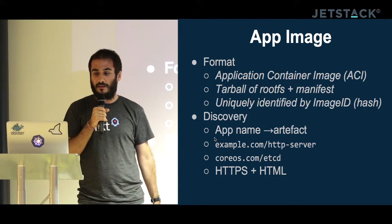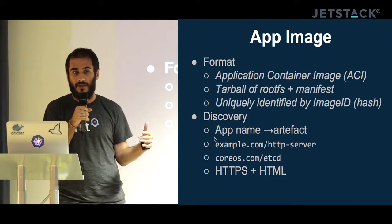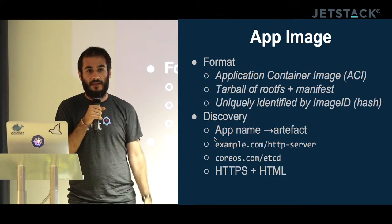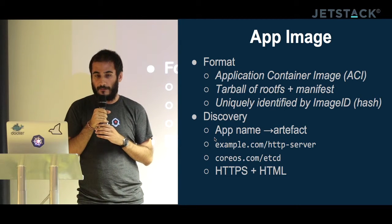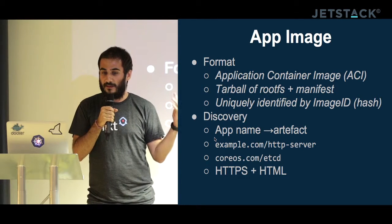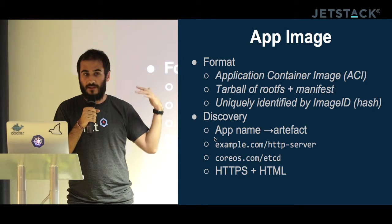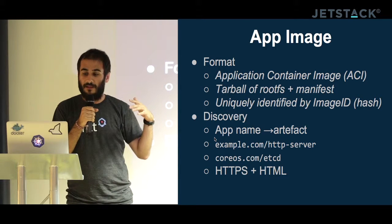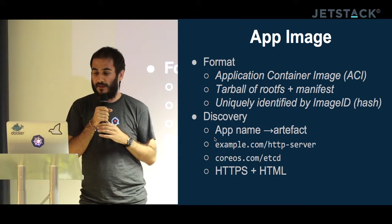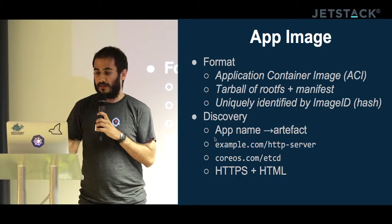One interesting thing about the spec is how you discover new applications. The idea in Rocket is that there's no centralized store — it reuses the DNS namespace. So if you have an app named example.com/http-server and you want to find the artifacts it's composed of, Rocket does an HTTPS request to that server, gets the HTML, and there are meta tags that tell you exactly where the images are located. That decouples the discovery of images from the actual artifacts.